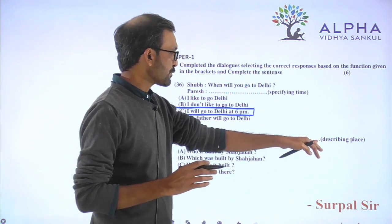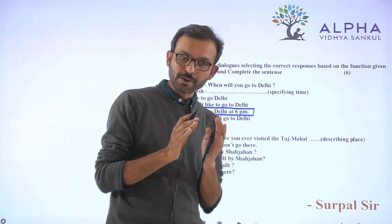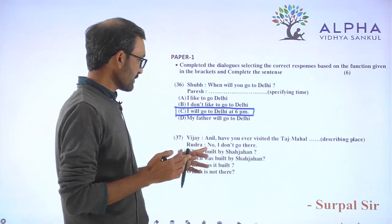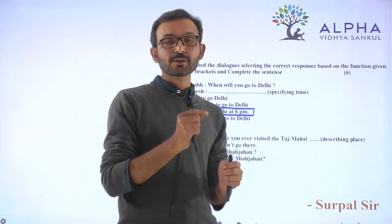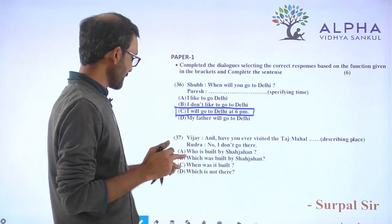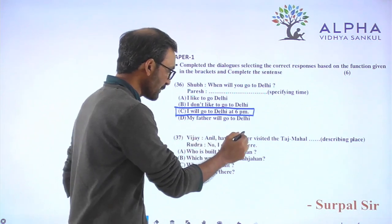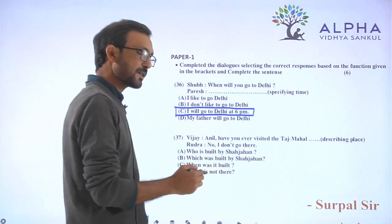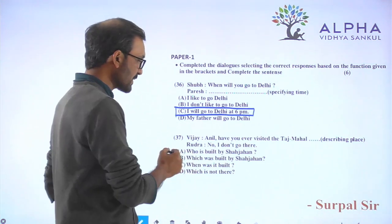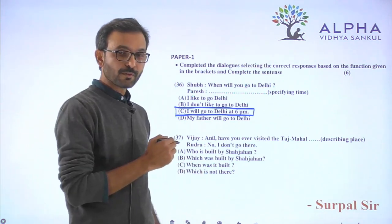The Vijay sentence is describing a place — the Taj Mahal is the place being described. It is the place which was built by Shah Jahan. 'Have you ever visited the Taj Mahal, which was built by Shah Jahan?' The sentence is complete. The question relates to the place — when was it built? That was the question about the place.